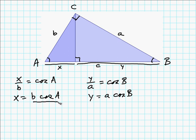Notice that these two lengths add up to C. So B cosine A plus A cosine B is equal to length C.